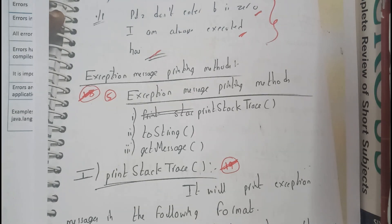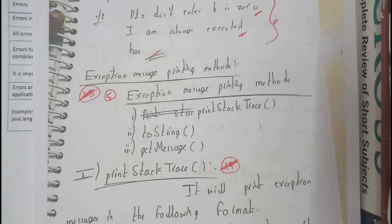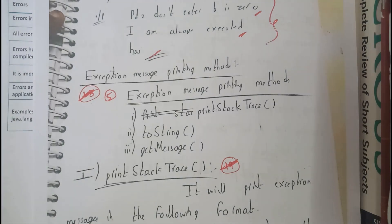Hello guys, we are back with our next tutorial. In this tutorial, let us go through exception message printing methods. There are a few methods by using which we can print the appropriate message from the whole exception. Whenever we do exception handling, it gives you a three to four line message. It gives an accurate and detailed message, but it's not always required. You need a short and sweet message, so that is the reason why these methods came into play.